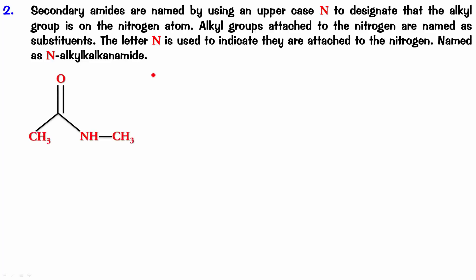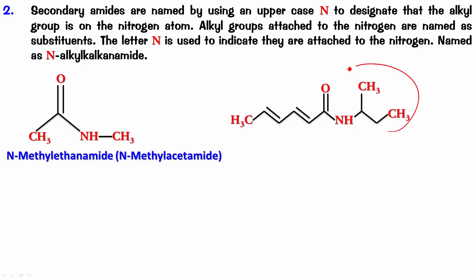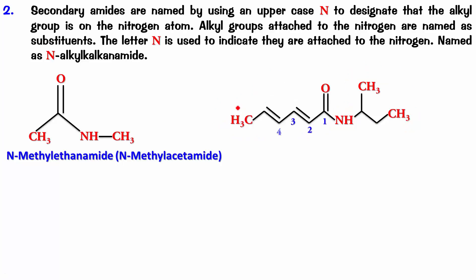Try naming this one — pause the video, check the answer and play it back. There is a methyl on the nitrogen, so this is going to be N-methyl-ethanamide or N-methyl-acetamide. For the next example, on the N you have a secondary butyl group. Counting the parent chain: 1, 2, 3, 4, 5, 6 — it is hexa-2,4-dienamide. So the full name is N-sec-butyl-hexa-2,4-dienamide.